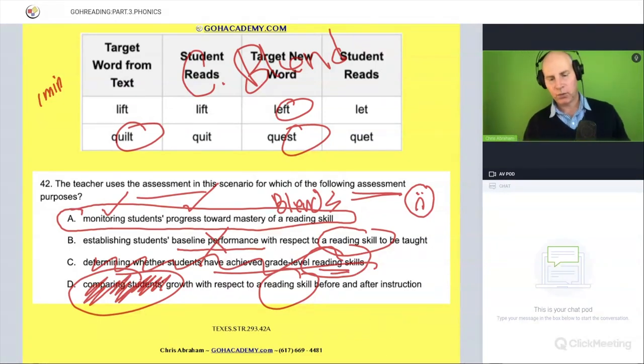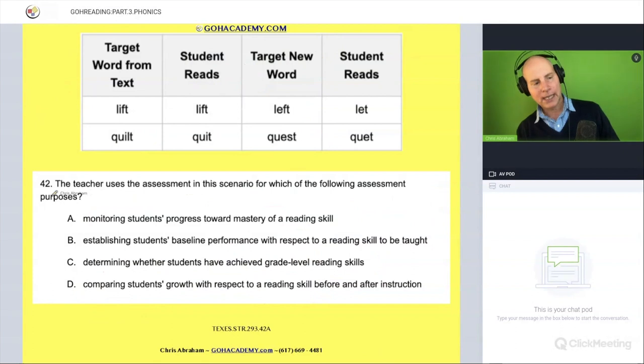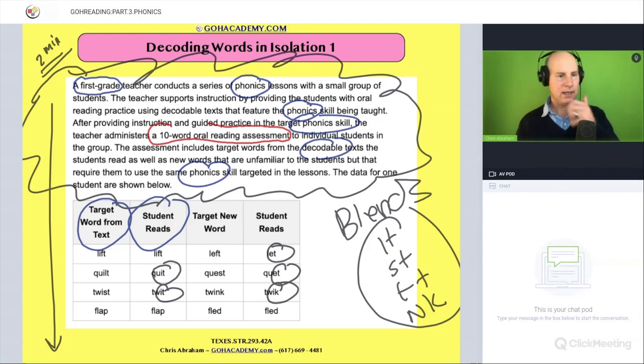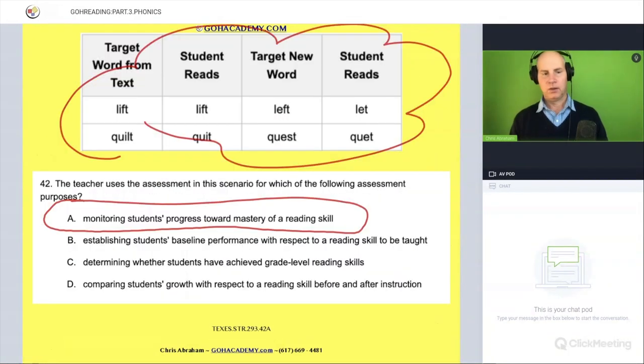So in a very generic way, A is correct because all A is saying is this is an assessment. Does it say after providing instruction and guided practice on the skill, they do this test? So they've already done the instruction and guided practice. Now they see how the student did. So really right now, this is monitoring if they mastered the skill or not, did they learn it or not? That would be the goal based on that scenario.